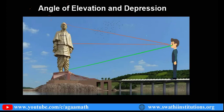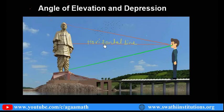If you observe these lines here, this line is said to be the horizontal line — or we can say it as the eyesight horizontal line. This is the horizontal line: whenever we stand exactly erect and look straight, this line is parallel to the ground.